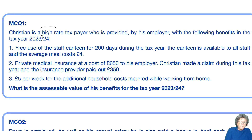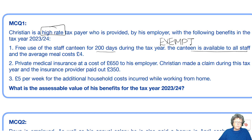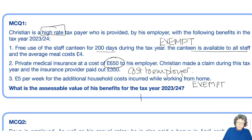Christian is a higher-rate taxpayer with the following benefits. Free use of the staff canteen — 200 days, available to all staff — we haven't been given any way of calculating that, it's not one of the main things, so it is exempt. Private medical insurance at a cost of £650 — he made a claim and the insurance provider paid out £350, but the rule is it's the cost to the employer, so the payout is irrelevant. Then £5 a week additional household expenses — that's exempt. So the answer is £650.